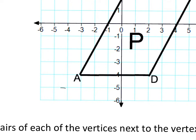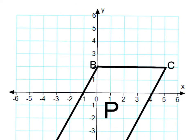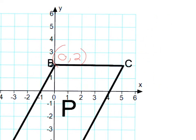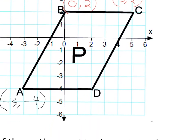Part A says write the ordered pairs of each of the vertices next to the vertex point. So A is (-3, -4). I'm going to use a different color for the next one. B is (0, 2), C is (5, 2), and D is (2, -4). Those are all correct.